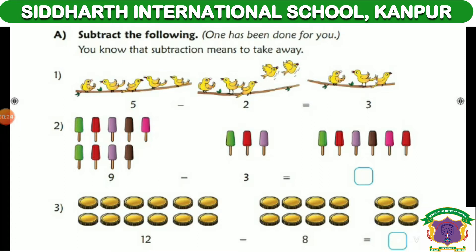Now here are 9 ice creams and take away 3 from 9, so left here — count 1, 2, 3, 4, 5, 6. Right, here is 6.